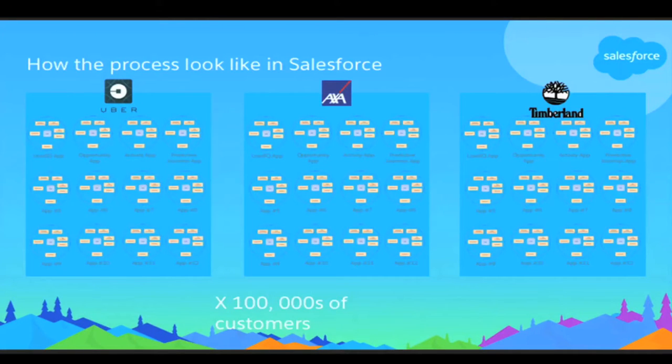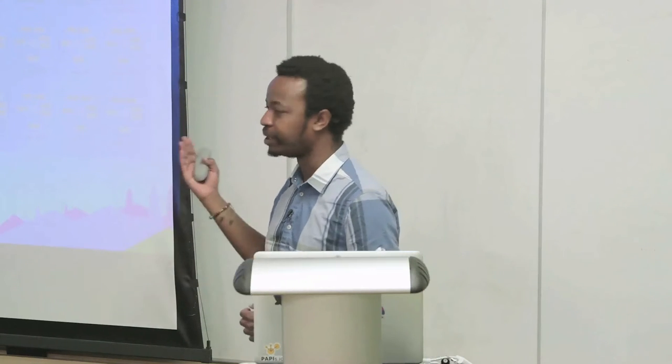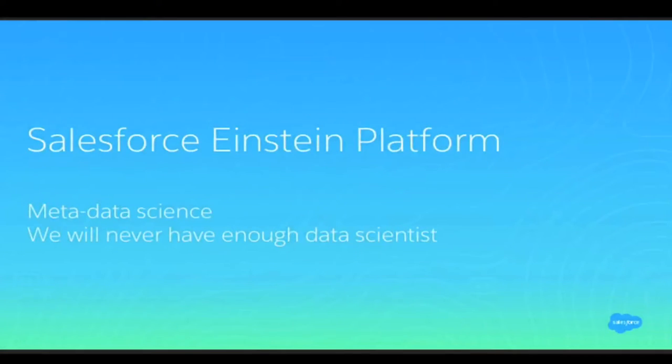We need to be able to create all these things at scale every single day or every single hour. Even if we hired all the data scientists in the world, we wouldn't be able to deliver all the machine learning functionality across all the products. So we had to rethink how we can do data science — which is where we come up with what we call meta data science: teaching computers how to do data science.